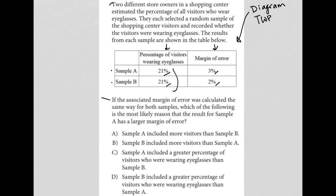So the actual question says, if the associated margin of error was calculated the same way for both samples, which of the following is the most likely reason that the result for sample A has a larger margin of error?